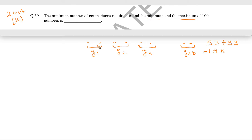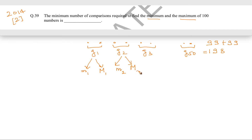In each group, you do just one comparison. In one comparison, you can see what is going to be the minimum element and what is going to be the maximum element in group G1. Similarly, in the second group, one comparison tells us the smaller and bigger element — the minimum and maximum for that group. Doing this for all 50 groups gives us 50 comparisons total.